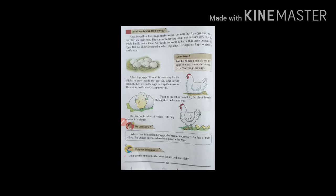A chicken is born from an egg, and butterflies, fish, frogs, and snakes are all animals that lay eggs. But we do not often see their eggs. The eggs of some very small animals are very tiny. We would hardly notice them. So we do not come to know that these animals lay eggs, but we know for sure that hens lay eggs. Her eggs are big enough to be easily seen.